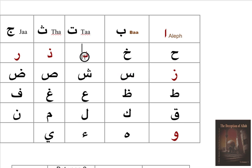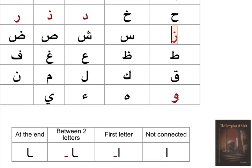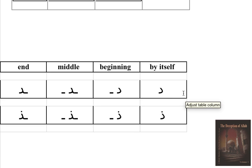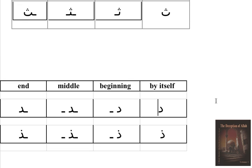Now let us go and see letter 'tha,' letter 'ra,' and letter 'za.' This is letter 'da' as you see in front of your eyes. Letter 'da' is one of those letters which do not accept connection from the left side.